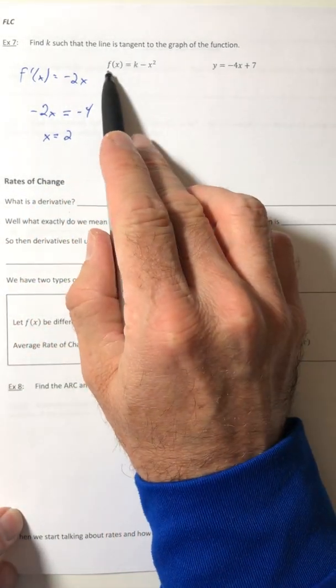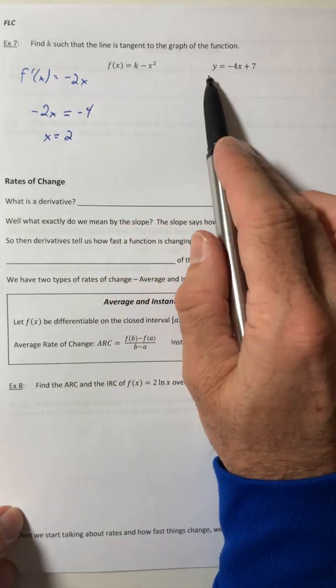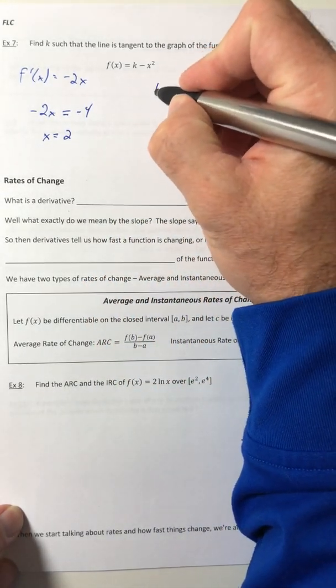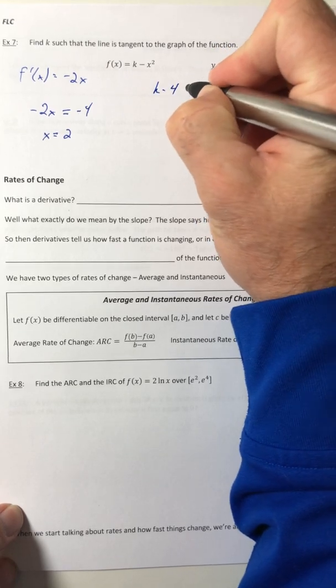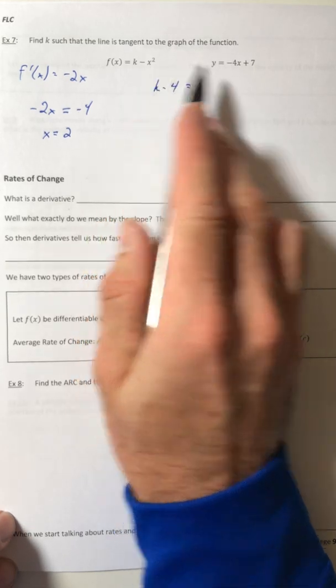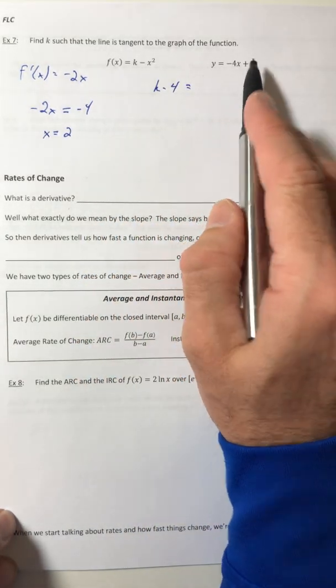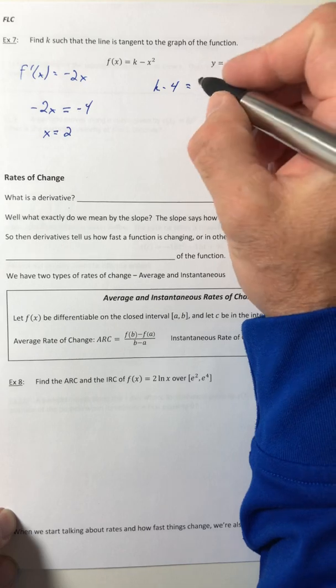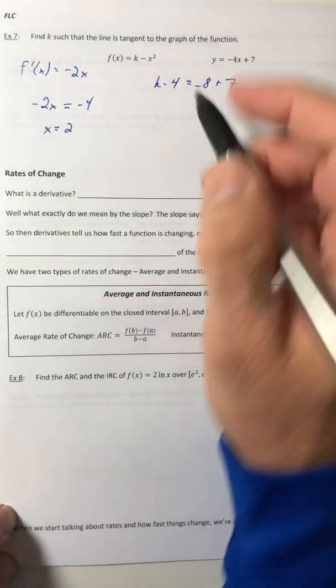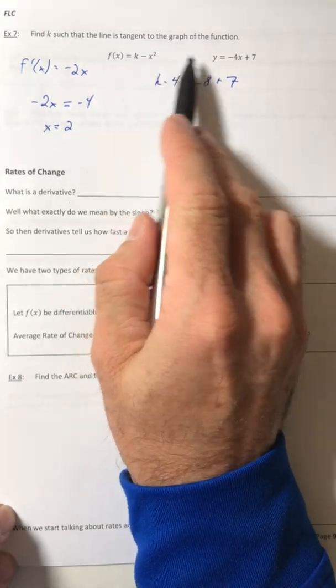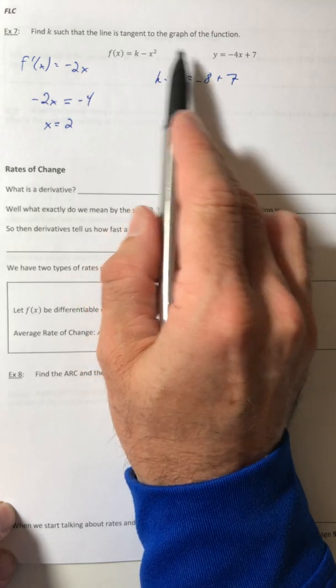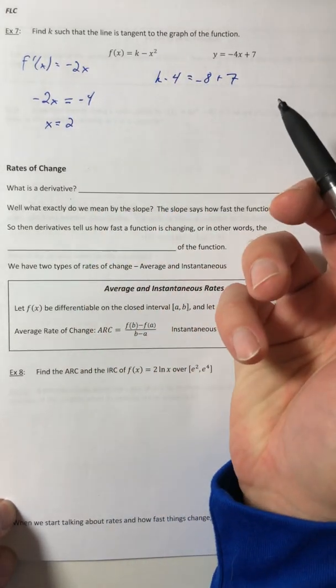So we know what x value that occurs at. So let's go ahead and plug it into the function. And then we're also going to plug it into the line. So k - 4, that's when we plug the 2 in for x into the function. And then we're also going to plug it into here, so -4 times 2 is -8 and then plus the 7. And we did that because the line and the function, when they're tangent, they're going to share the same exact y value.